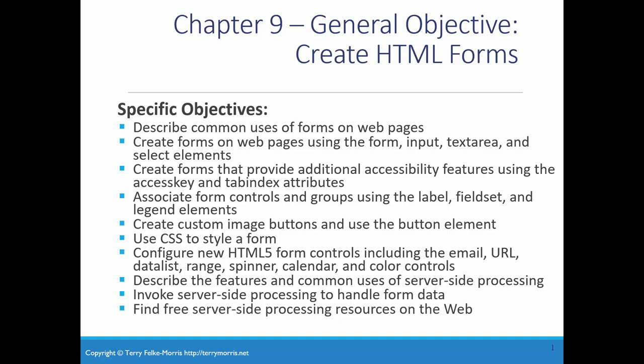Then we'll talk about how we can add accessibility features to forms by using things like tab index. We'll associate form controls with labels, field sets, and legends. We'll create custom image buttons and just use the regular button element. Then we'll use CSS to style a form to make it look more professional. Finally, we'll talk about some of the new HTML5 controls for forms, such as the email and URL controls.